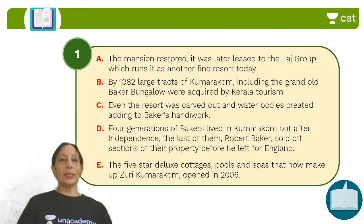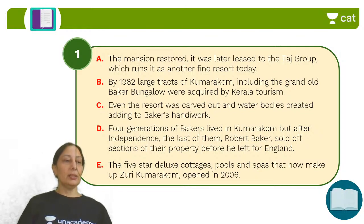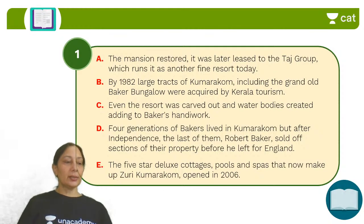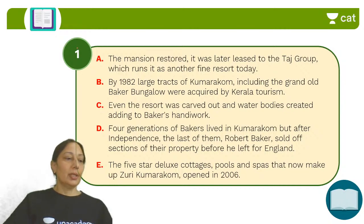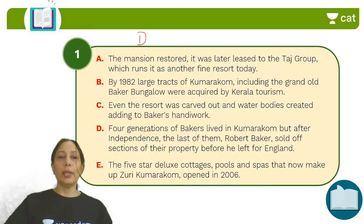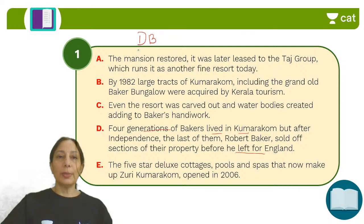B is not the opening sentence. D is the opening sentence. D is going back to the past — it is talking about when they lived. After independence, the last of them, Robert Barker, sold sections of his property before he left for England. So you start with D and then go to B. By 1982, large tracts of Kumarakonam including the Grand Bungalow were acquired by Kerala Tourism. So D-B is correct — everyone has got this combination right.